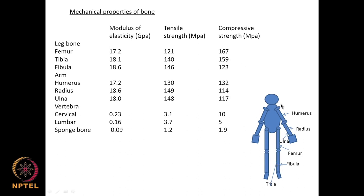Similarly for the arm: you have the humerus, and in the forearm the radius (outside) and ulna (inside). Again they show some difference in the modulus of elasticity, and there is a significant difference in their compressive strength as well. The ulna has the lowest compressive strength whereas the humerus has the highest.